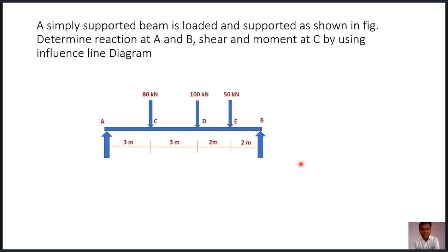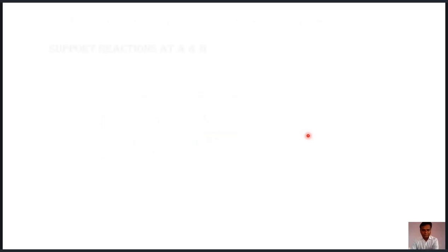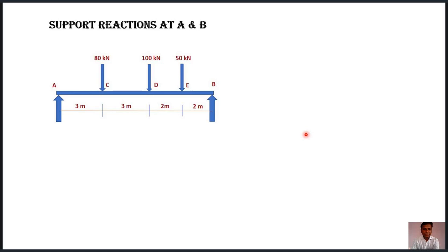Now let us see how to find out reaction at A and reaction at B, also shear force and bending moment at point C using influence line diagram. These three parameters we can also find out using conditions of equilibrium by regular procedure, but here we have to study the application of influence line diagram. The simply supported beam is subjected to three different point loads: 80 kN, 100 kN, and 50 kN.